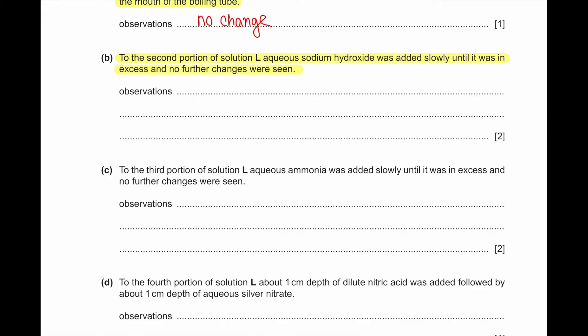Part B: To the second portion of solution L, aqueous sodium hydroxide was added slowly until in excess. Observation: initially a grey-green precipitate forms. When excess sodium hydroxide is added, the precipitate dissolves.